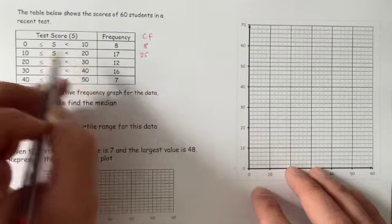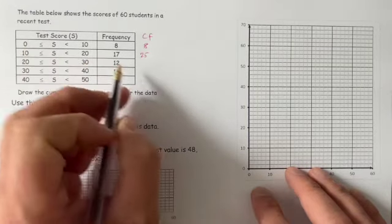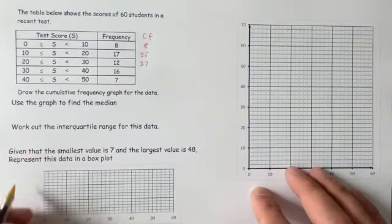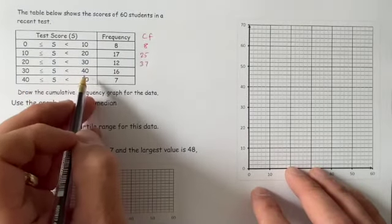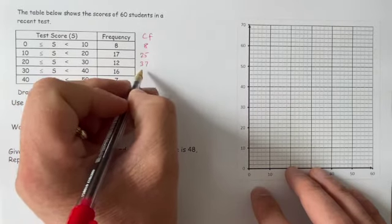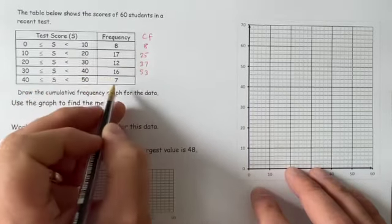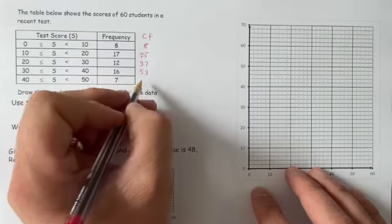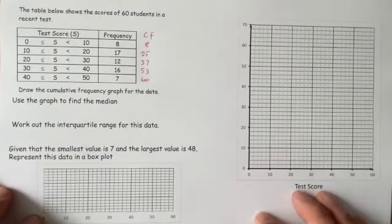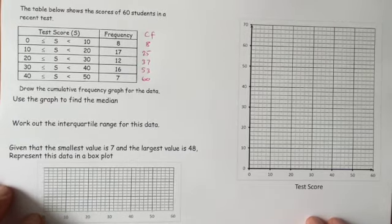So from 20 to 30, we know there was 12, so from 0 to 30 we know that there were another 12 students, so that makes 37 students. Likewise for the next one, we've got another 16 students on top of that, so we've got 53 students. And with those last 7 students, that makes the 60 students that they mentioned.